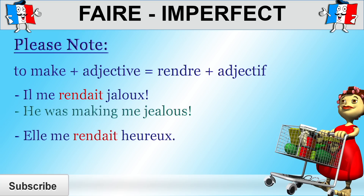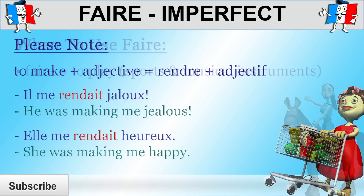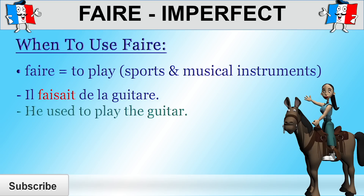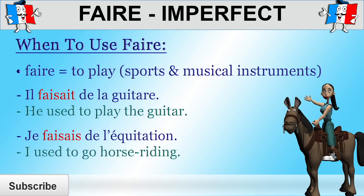You can also use faire when talking about musical instruments you play or sports you take part in. In that case, faire usually translates to to play, but it can also translate to to go, as in to go cycling, or to do, as in to do ballet. For example, il faisait de la guitare — he used to play the guitar, or he was playing guitar. Je faisais de l'équitation — I used to go horse riding, or I was horse riding.